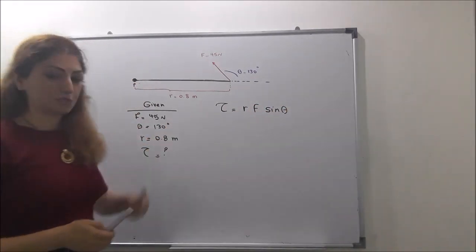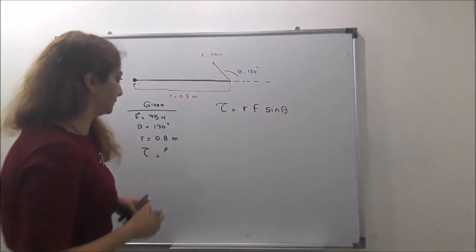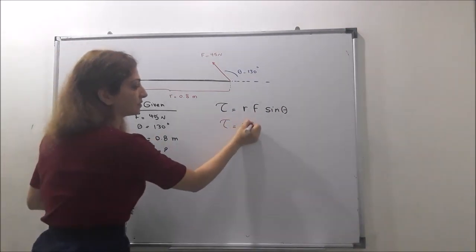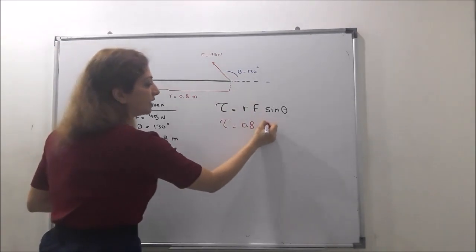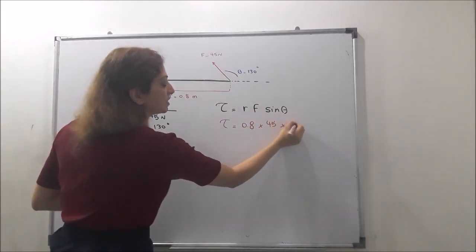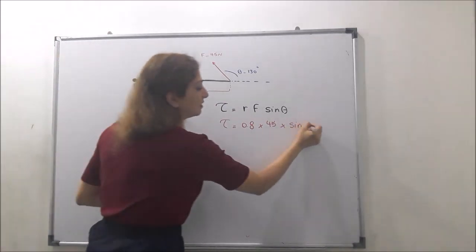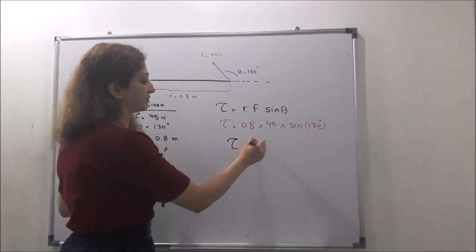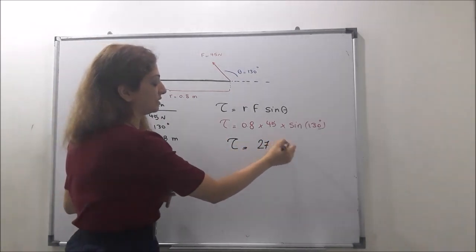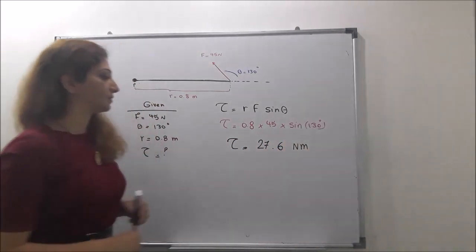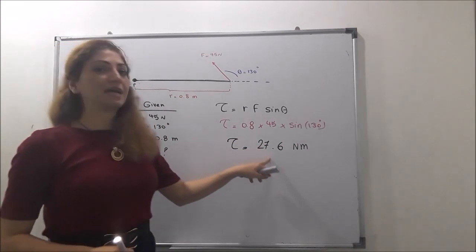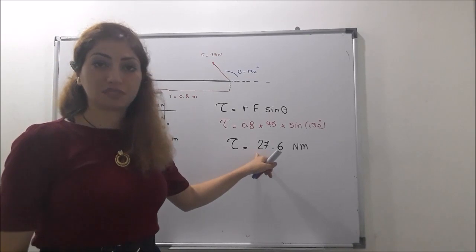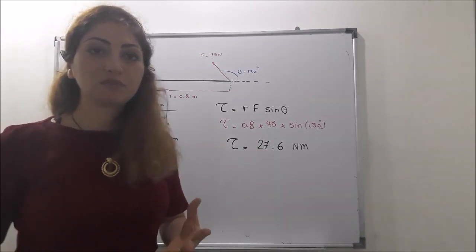If we do the math, the torque equals R, which is 0.8 meters, times F, which is 45 Newtons, times sine of 130 degrees. If you do the math, we find the torque is 27.6 Newton meters.